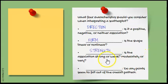Next, the strength. Is the association strong or weak? Is it moderately strong or very strong? Moderately weak? Very weak? Explain the strength of the relationship. And then lastly, outliers. You could also call this unusual features. Do any points seem to fall out of the overall pattern?